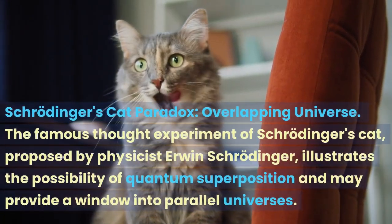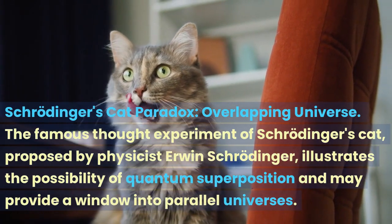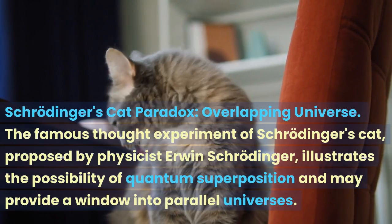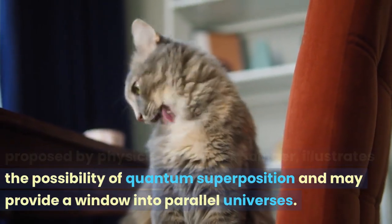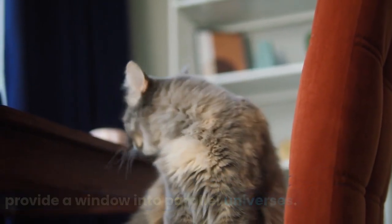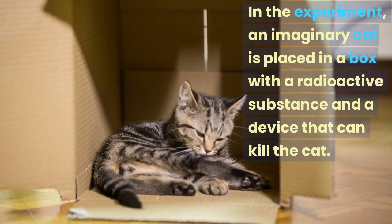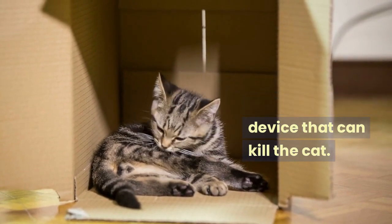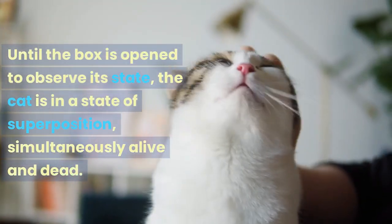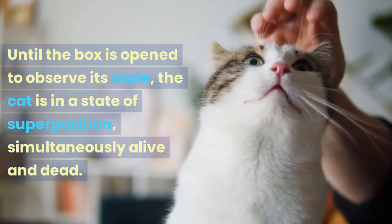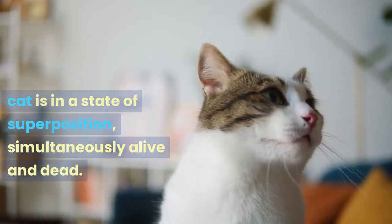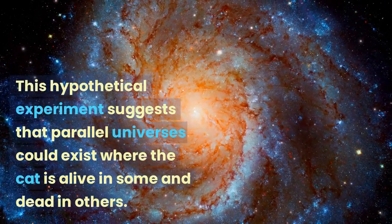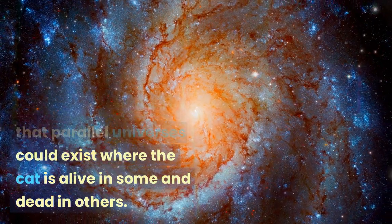Schrödinger's cat paradox: overlapping universe. The famous thought experiment of Schrödinger's cat, proposed by physicist Erwin Schrödinger, illustrates the possibility of quantum superposition and may provide a window into parallel universes. In the experiment, an imaginary cat is placed in a box with a radioactive substance and a device that can kill the cat. Until the box is open to observe its state, the cat is in a state of superposition, simultaneously alive and dead. This hypothetical experiment suggests that parallel universes could exist where the cat is alive in some and dead in others.